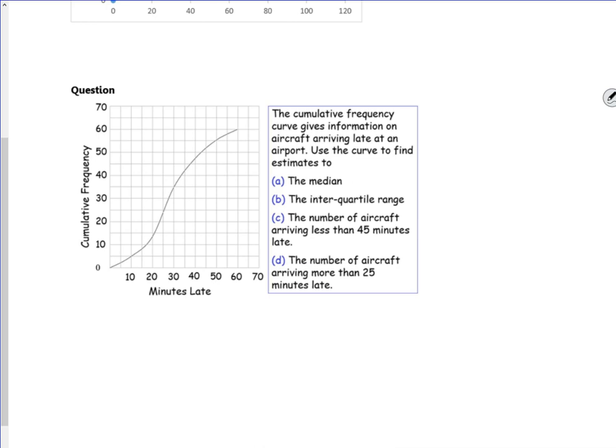So it says, cumulative frequency curve, there's information about aircraft arriving late at an airport. So we want the median, so it goes to 60. Lovely. So my median, I'm going to go with about 27, 28 minutes for that. We've actually put 27.5, we'll go with that.